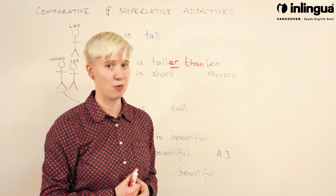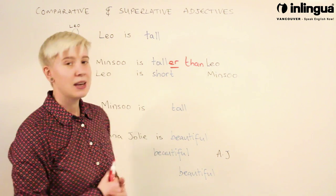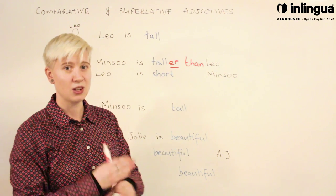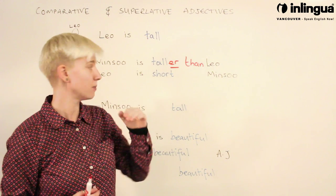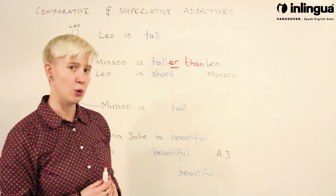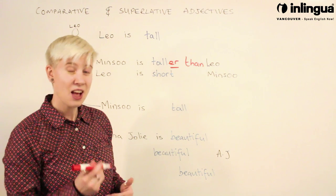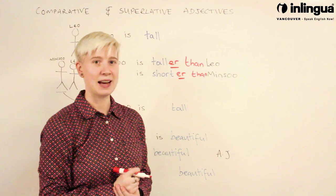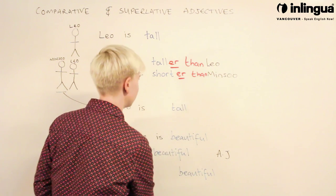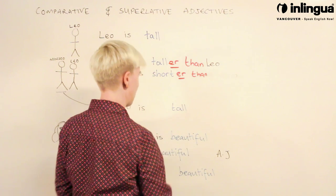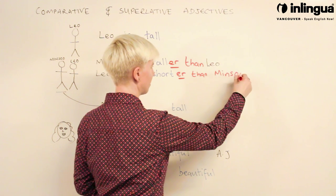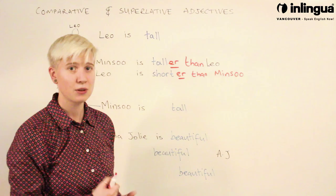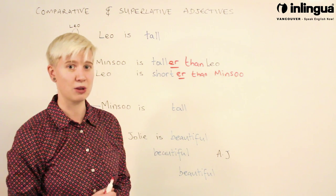We can swap the adjective if we want — it works the same way. So now I'm going to use Leo as the subject of my sentence. We swap the adjective: not tall anymore, but short. Leo is shorter — we add 'er' and 'than' — Leo is shorter than Minsu. You can use any adjective in a comparative when we are talking about two things and comparing them.